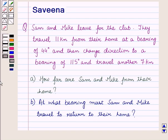Hello and welcome to the session. In this session we discuss a question which says that Sam and Mike leave for the club. They travel 11 kilometers from their home at a bearing of 44 degrees, then change direction to a bearing of 115 degrees and travel another 7 kilometers. Part A is how far are Sam and Mike from their home, and Part B is at what bearing must Sam and Mike travel to return to their home.